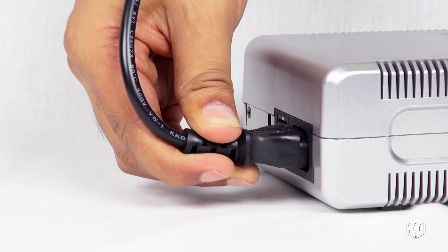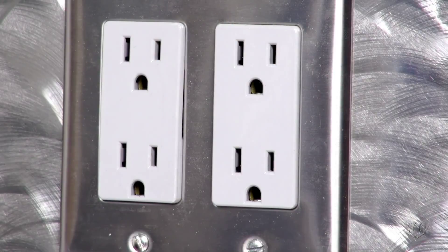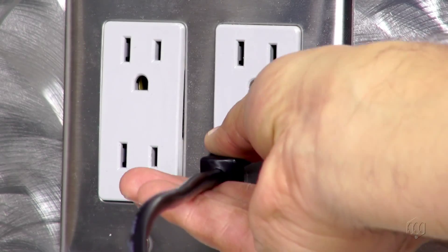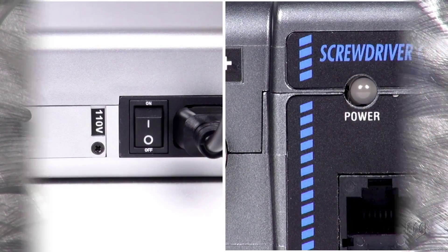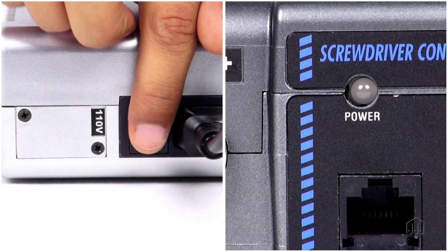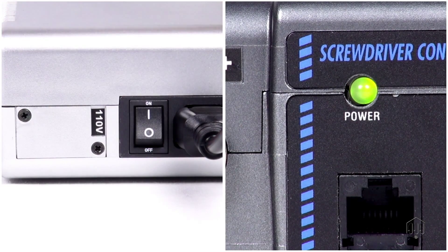Connect the power cord to the back of the transformer and plug it into the outlet. Flip the power switch to the on position located on the back of the transformer.